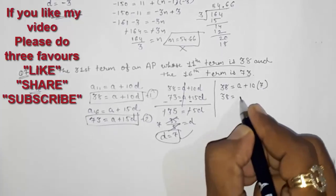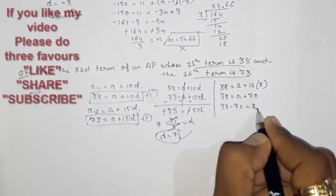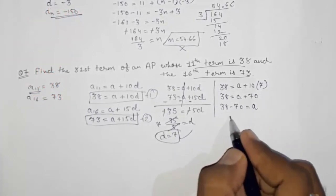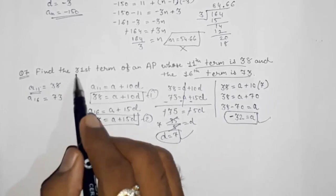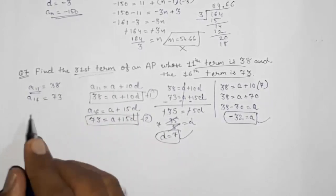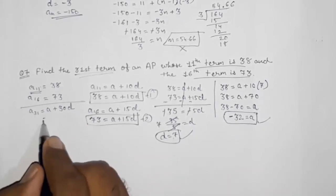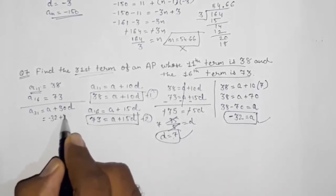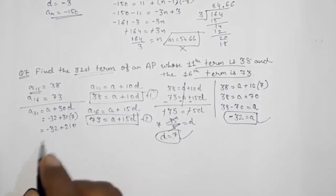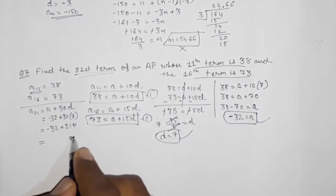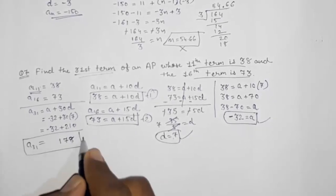Now putting d = 7 back into equation 1: 38 = a + 10 × 7 = a + 70, so a = 38 − 70 = −32. The first term is −32. Now finding the 31st term: a₃₁ = a + 30d = −32 + 30 × 7 = −32 + 210 = 178. So the 31st term is 178.